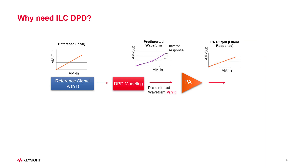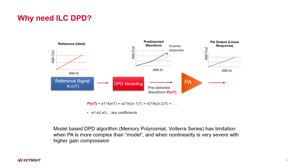A digital pre-distortion model is added before the power amplifier to distort the signal in exactly the opposite way as the DUT Power Amplifier does. So in an ideal world, the DUT Power Amplifier distorts the pre-distorted signal so that the output signal is linear again. We've talked about typical DPD models in the last video, such as memoryless model, look-up table, and memory models like memory polynomial and the Volterra series.